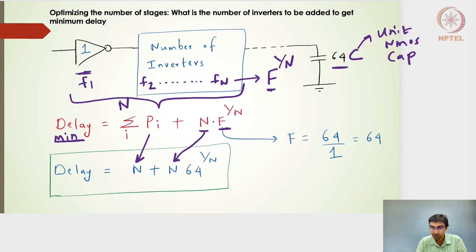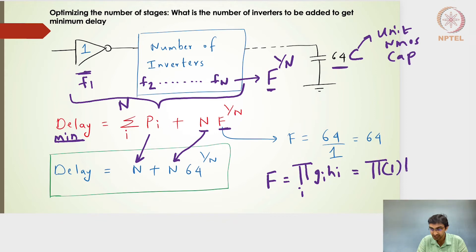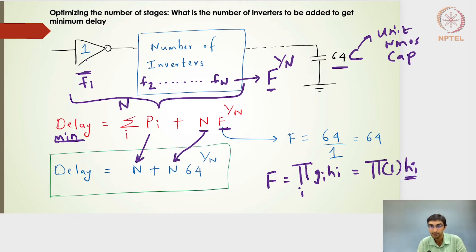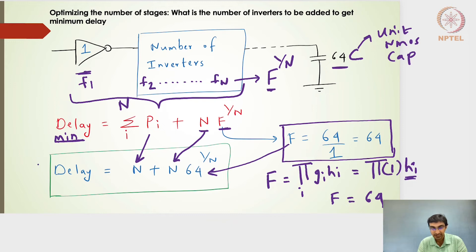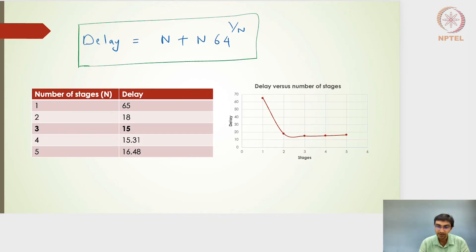The path effort F is the product of all G_i·H_i over all stages. For inverters, G_i = 1 always, and when we take the product of all H_i terms, the intermediate sizes X, Y, Z cancel, leaving only 64/1 = 64. So F = 64, and the minimum delay expression becomes N + N·64^(1/N).